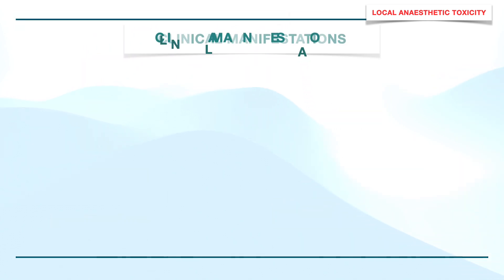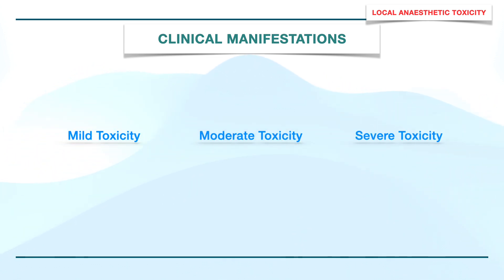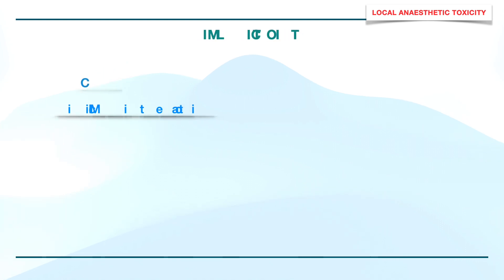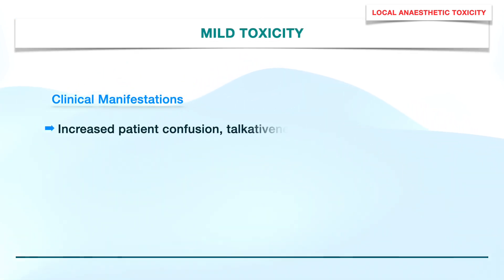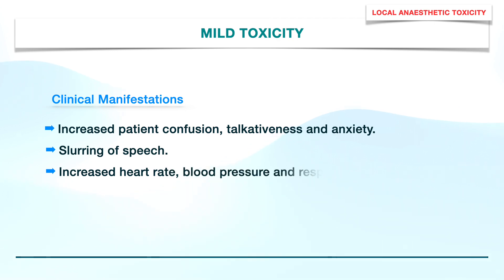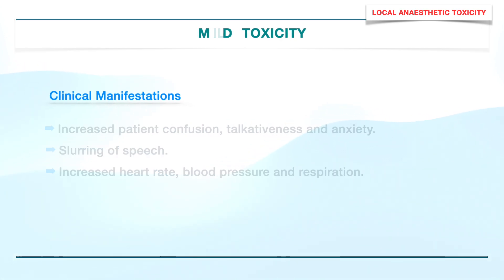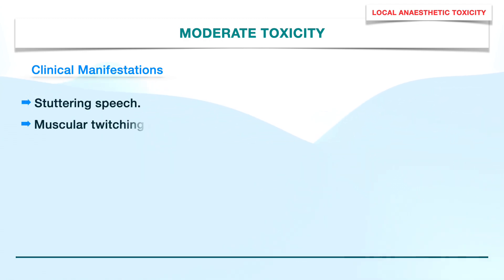Now coming to the clinical manifestations. These can be grouped as mild, moderate, and severe depending on the severity of toxic effects. In mild toxicity, the patient presents with confusion, anxiety, and talkativeness. There is slurring of speech and increased heart rate, blood pressure, and respiration. In moderate toxicity, there is stuttering of speech, muscular twitching, and tremors.